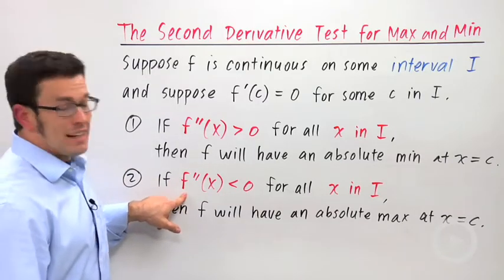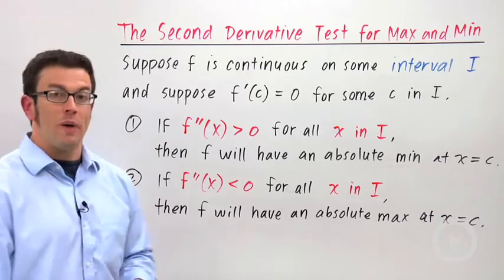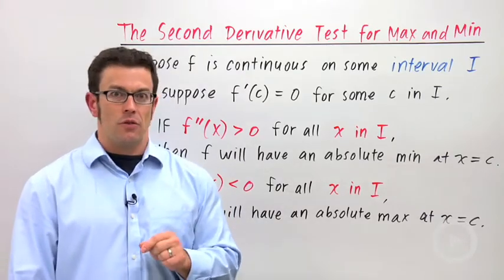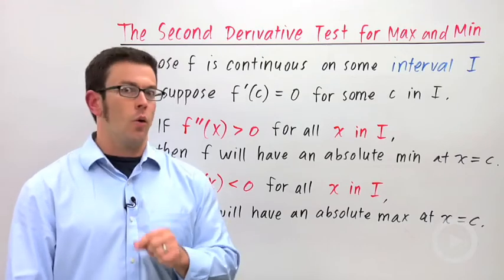And if the second derivative is always negative on the interval, it'll have an absolute maximum at x equals c. That's the second derivative test. Remember, the second derivative has to be always positive or always negative.